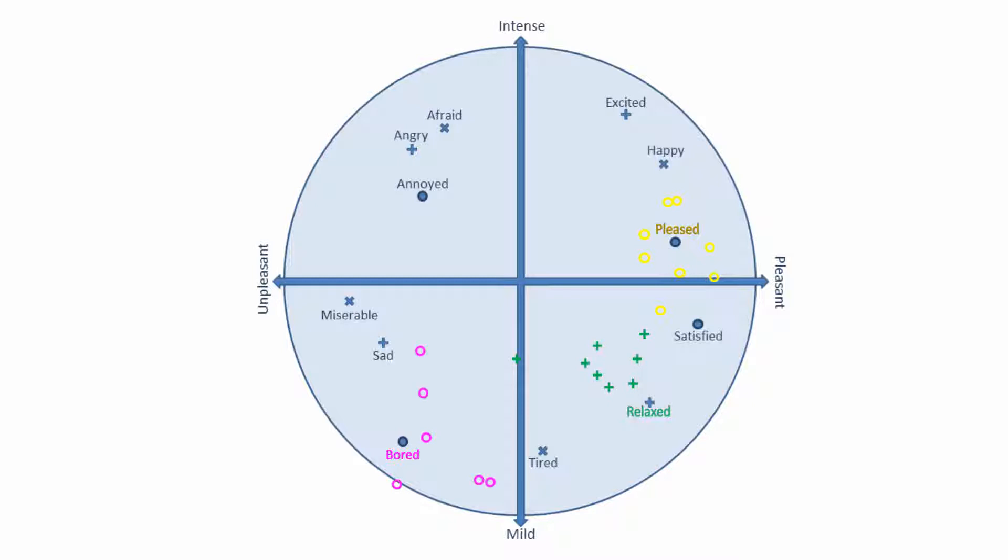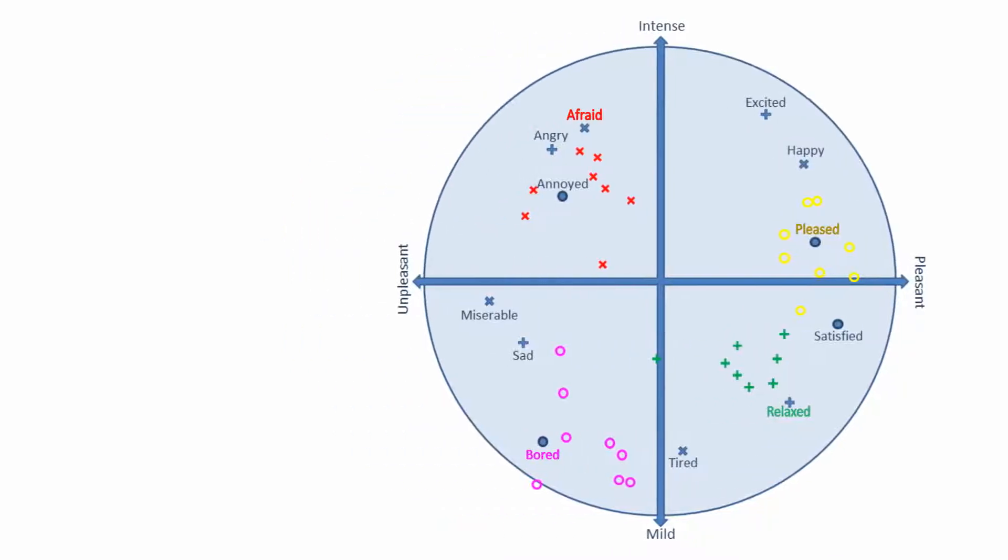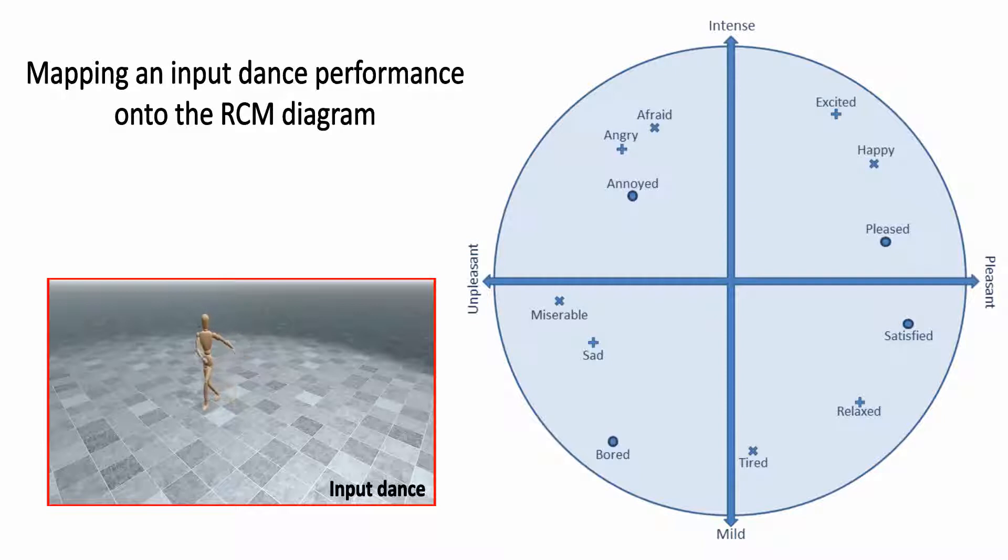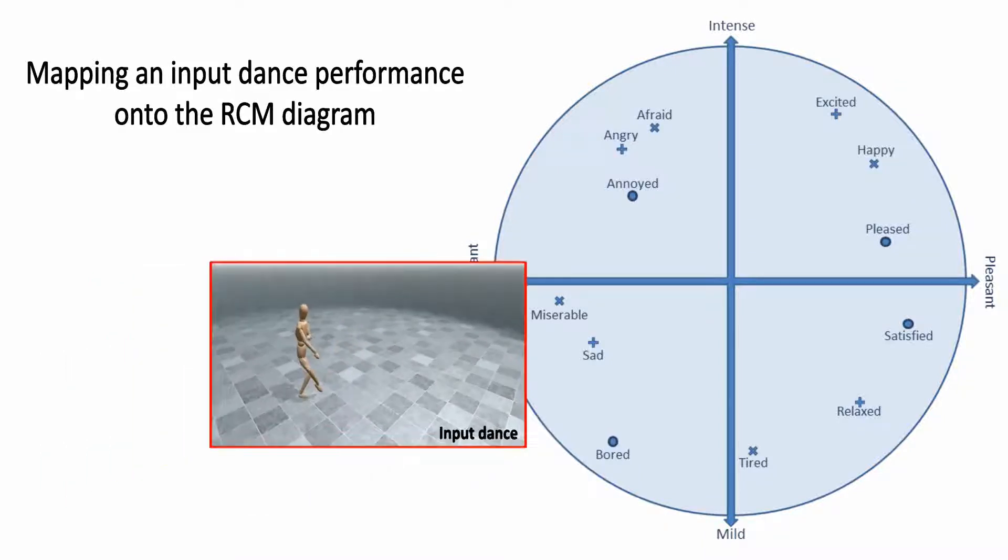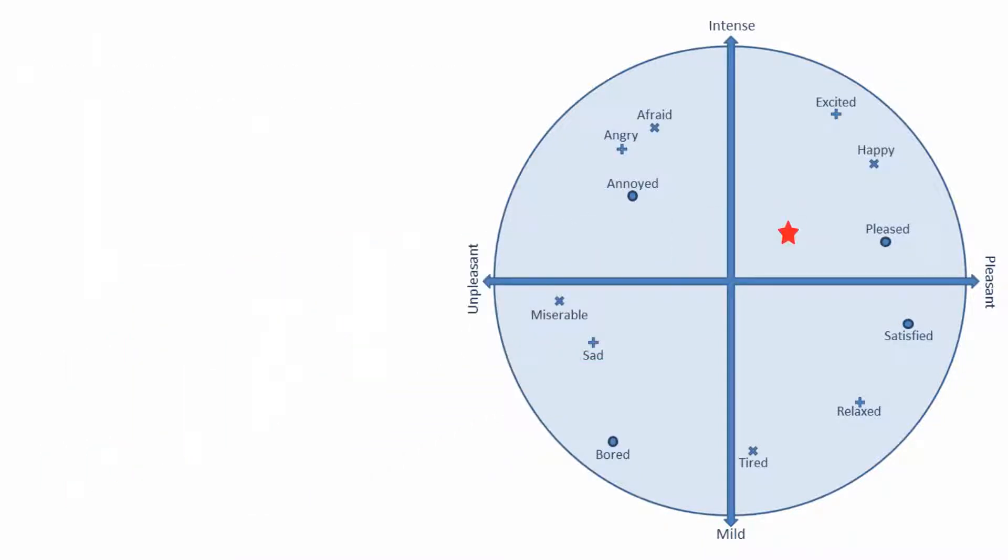We used regression analysis to enable mapping into the Russell-circumplex model of emotion. Using the RCM diagram as an intuitive high-level motion editing metaphor, users can simply choose the desired target of motion modification. Then, our motion stylizer automatically computes the modifications necessary to generate a stylized variation of the input motion.